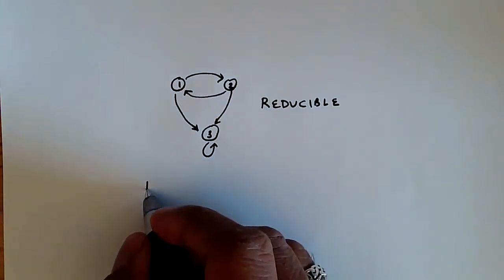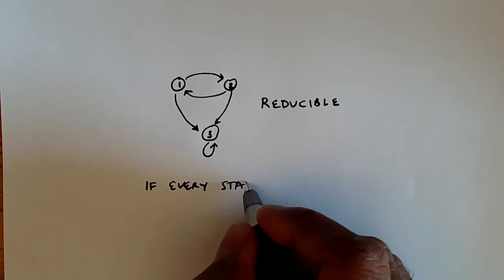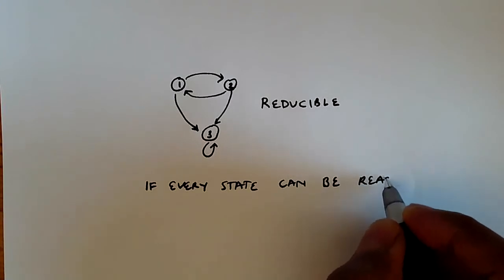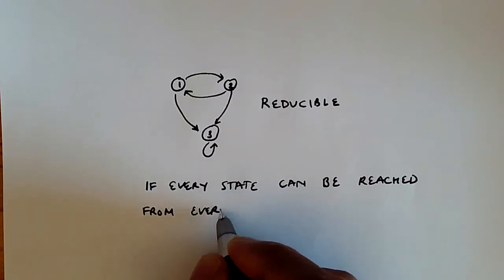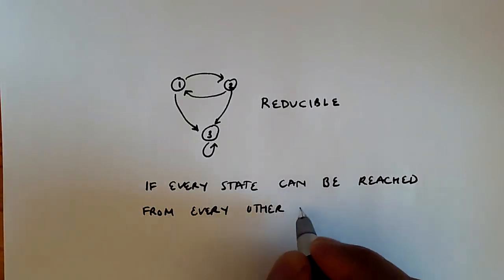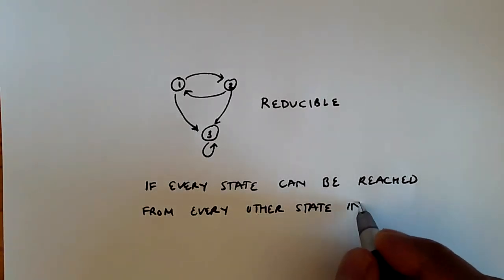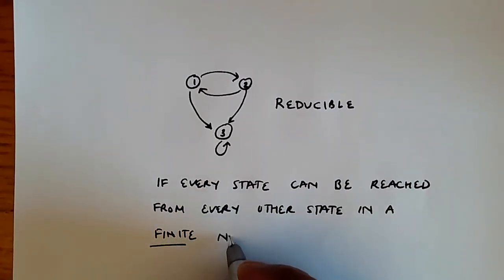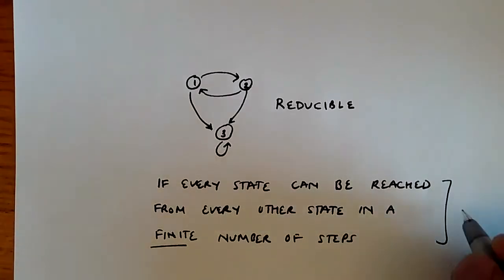On the other hand, if every state can be reached from every other state in a finite number of steps, then it's called irreducible, which is the opposite.